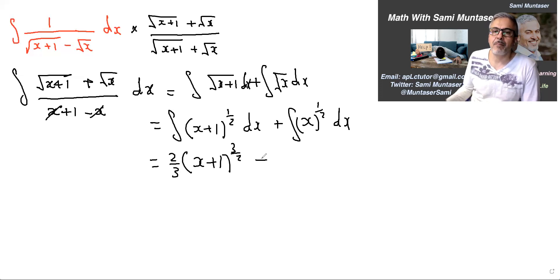Plus the same thing here. This becomes x to the 3/2, you add 1, and then multiply the front by the reciprocal of 3/2, plus c.